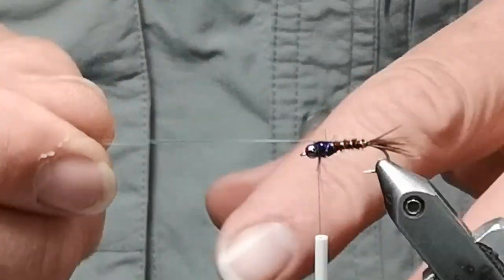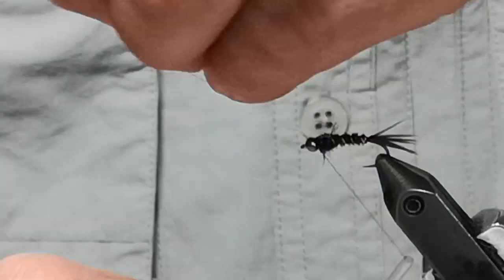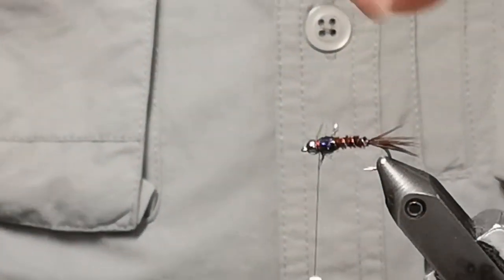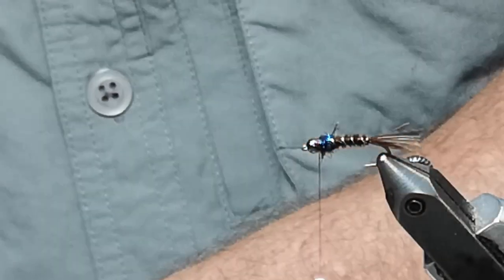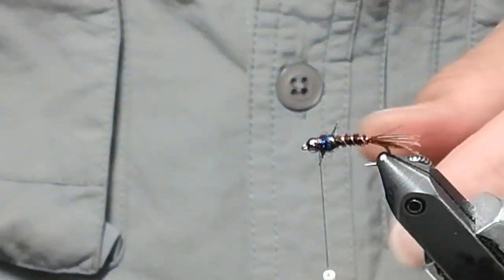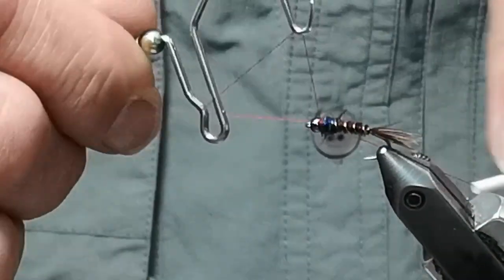Pull the hood over, secure the hood, cut off the excess, do our whip finish, glue the head.